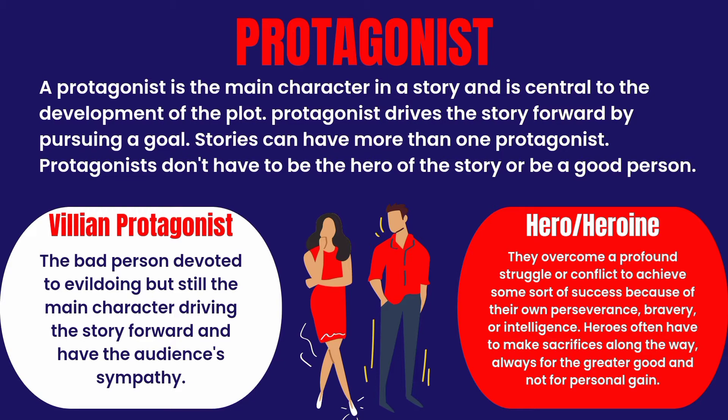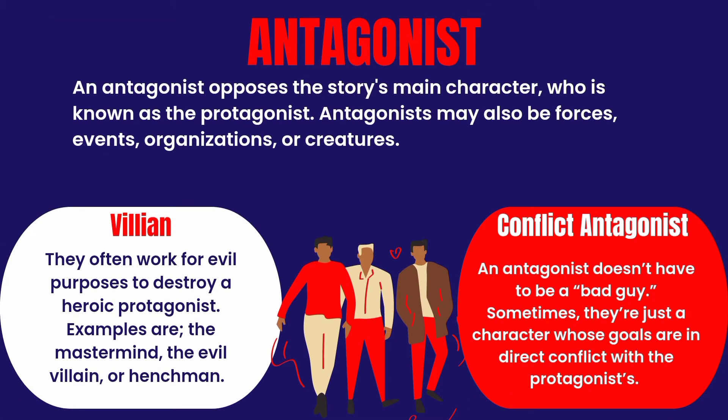Now let's look at the antagonist. An antagonist is the person who opposes the protagonist. And what you must note is an antagonist is not only a person — an antagonist can also be events, organizations, creatures, or forces. The first type of antagonist is the villain, who opposes the protagonist. We have different types of villain: the mastermind — someone always planning evil — the evil villain, and the henchman.